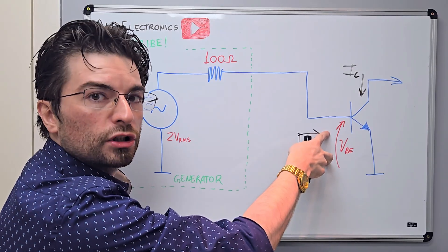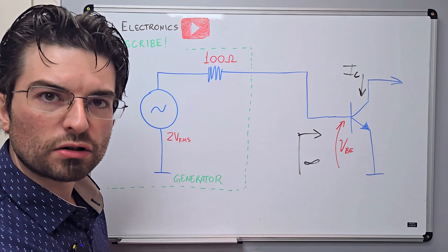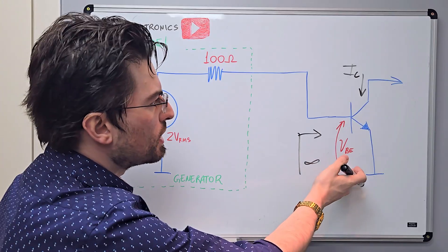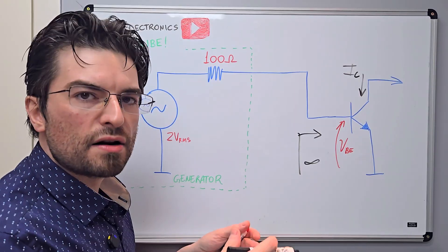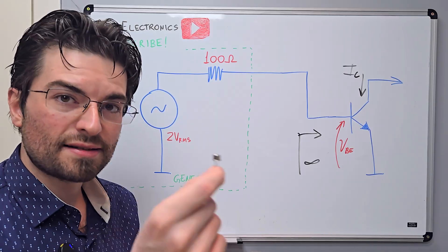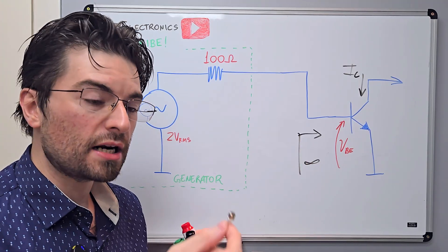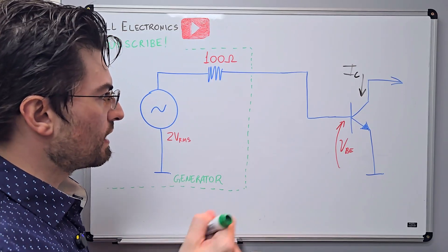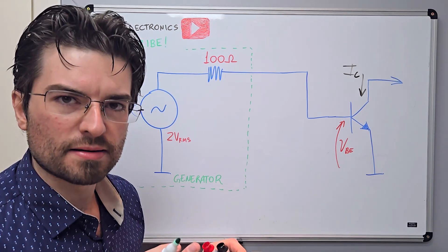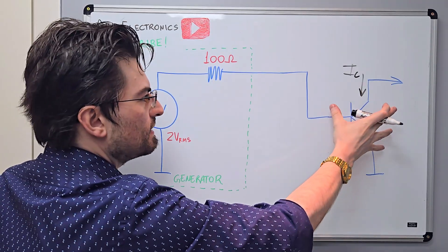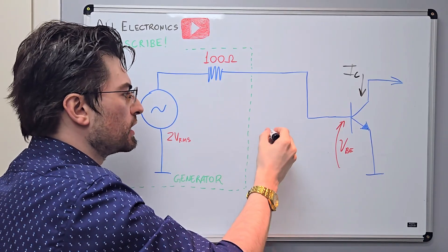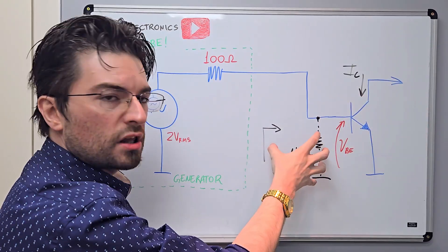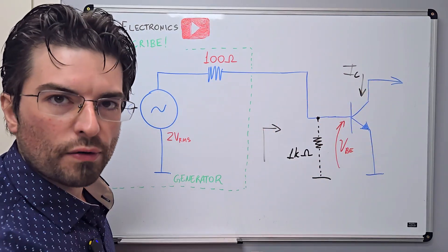Maximizing the voltage swing on the transistor input gives us maximum current swing on the collector, and we can extract maximum power from the output. I have drawn a common emitter amplifier here — not showing the biasing, just the concept. Let's get a practical transistor and imagine that the input impedance at a given frequency is very high. Let's say this transistor has a one kilo ohm resistive impedance at one megahertz. So looking from this direction, it looks like a one kilo ohm resistor.